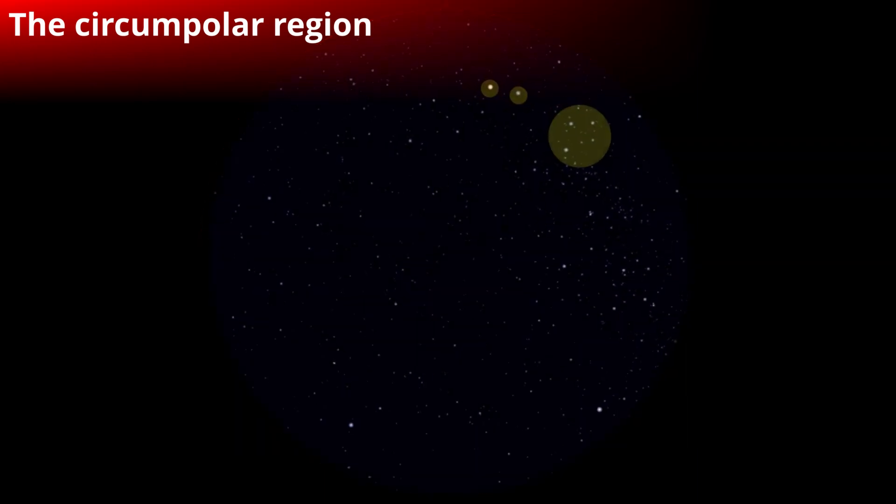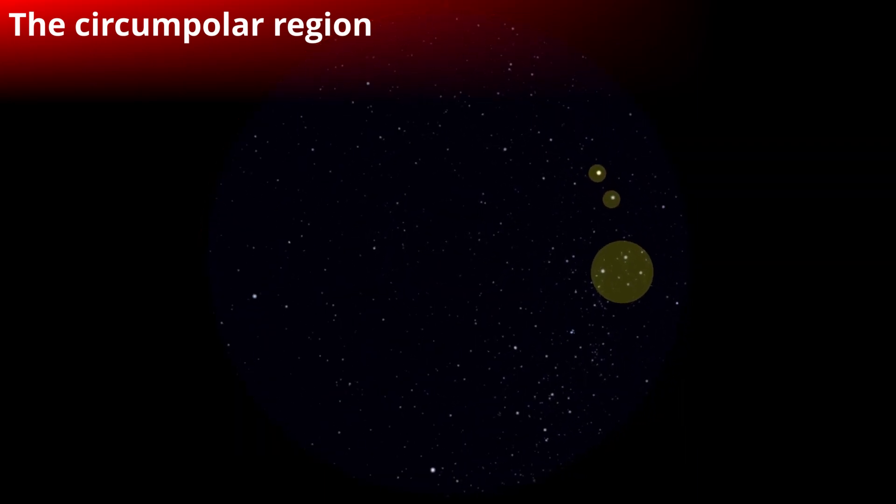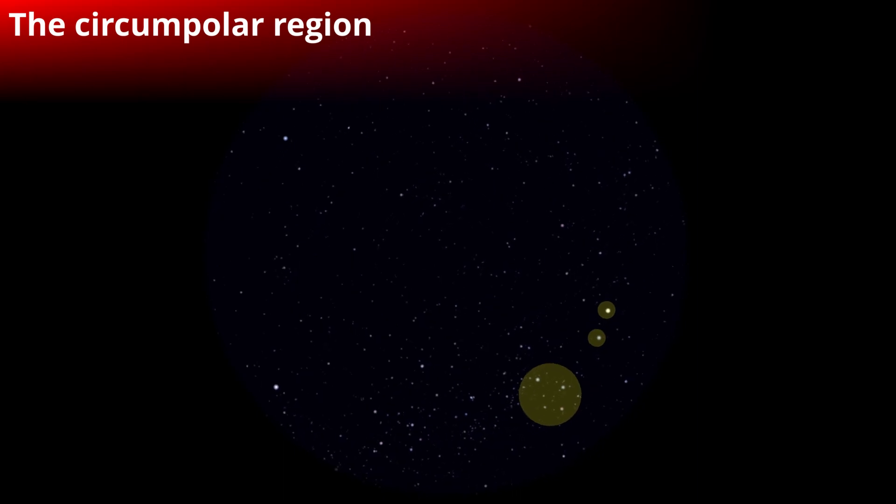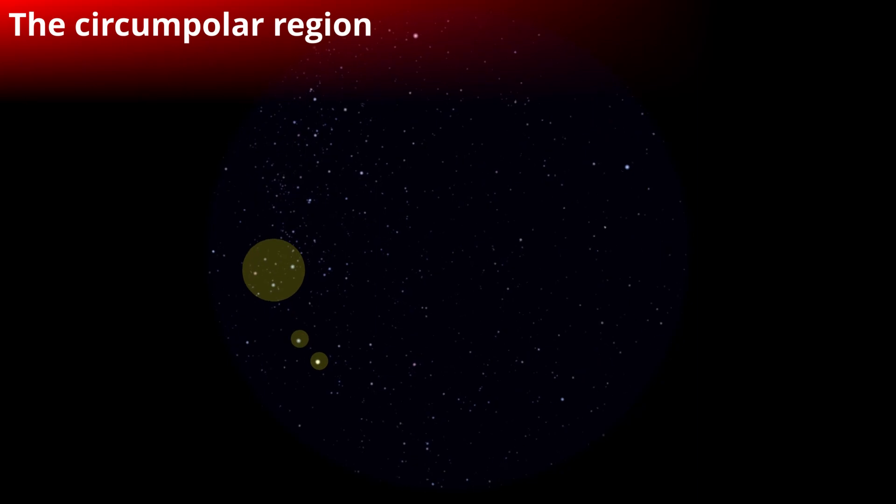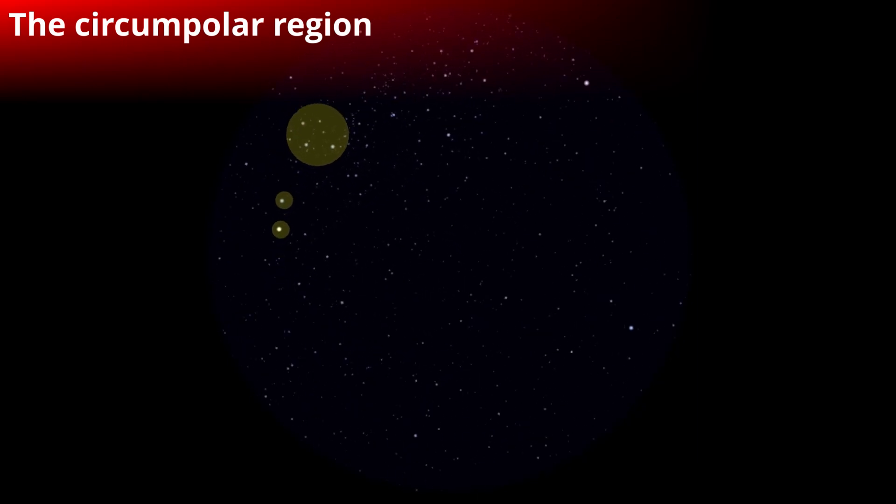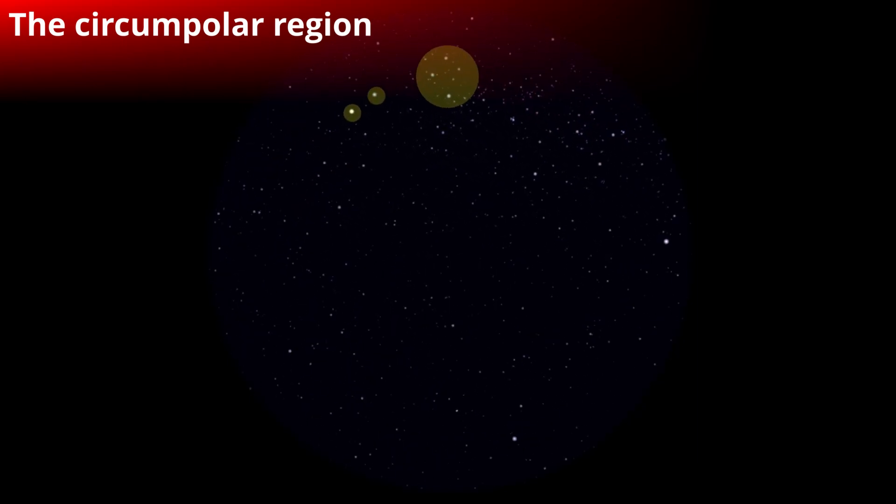The two Pointers and the Southern Cross rotate at about 30 degrees from the south celestial pole, so they can be anything from 10 degrees above the horizon, which is the same height as the Southern Cross, to 70 degrees.